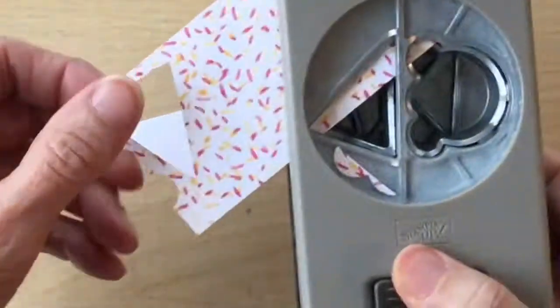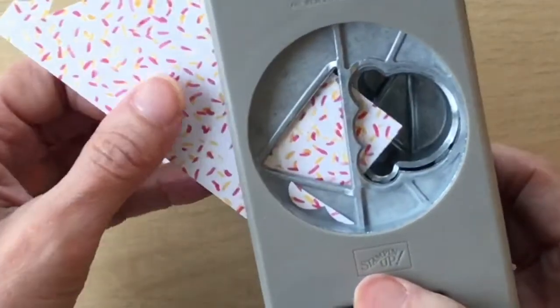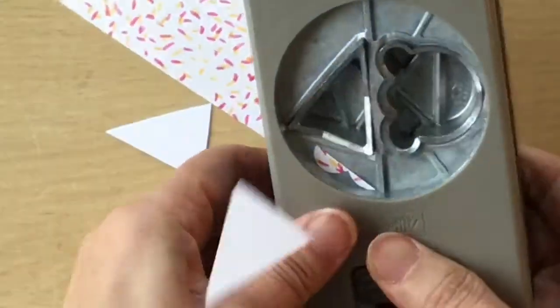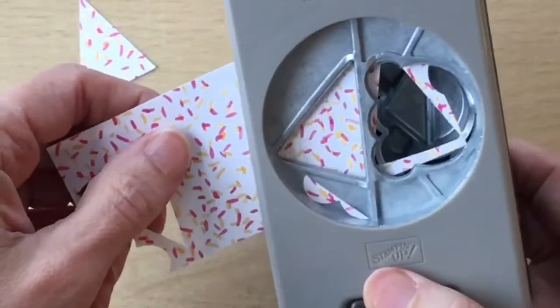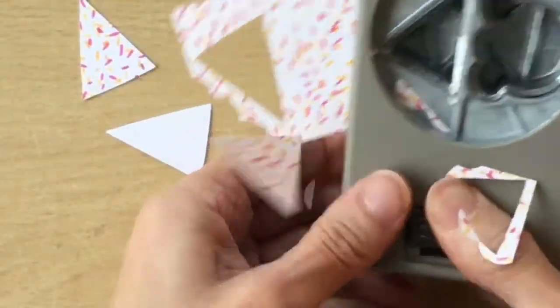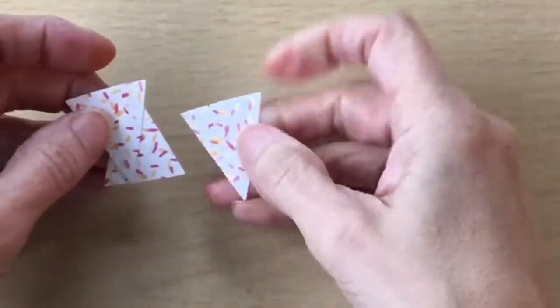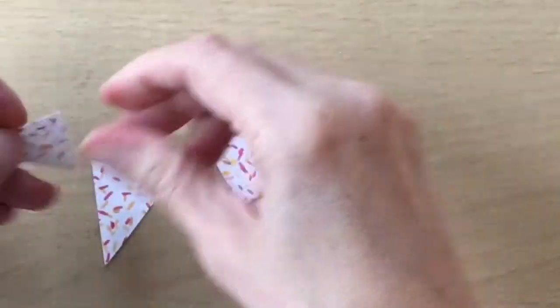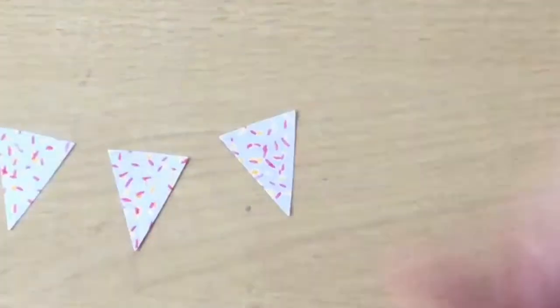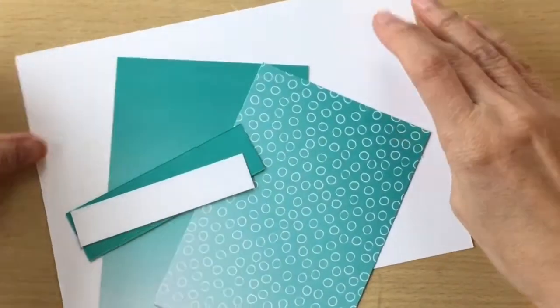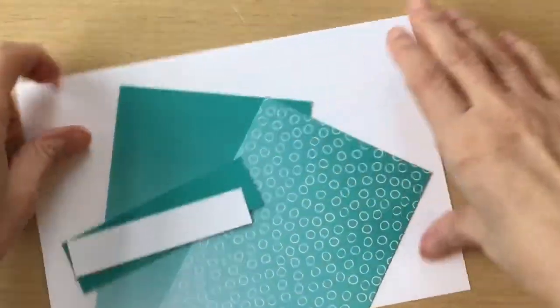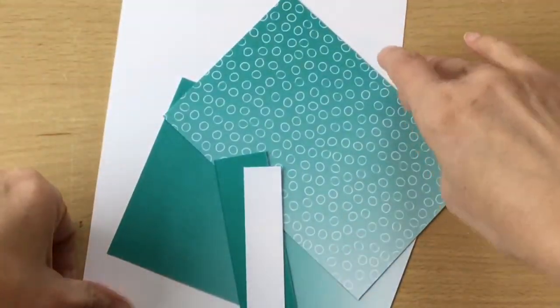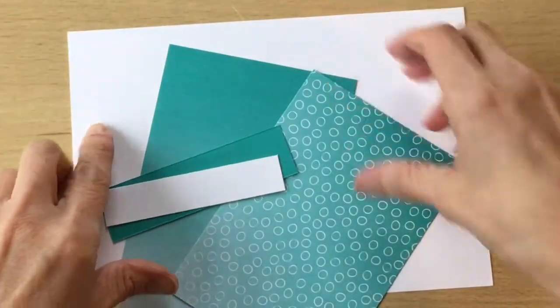We only need three, I think, yeah three. We're going to use these as little flags, some bunting. I'm using thick Whisper White as my card base, so that's an A4 piece of cardstock cut in half at 14.9, and we're going to score that at 10.5 centimeters.